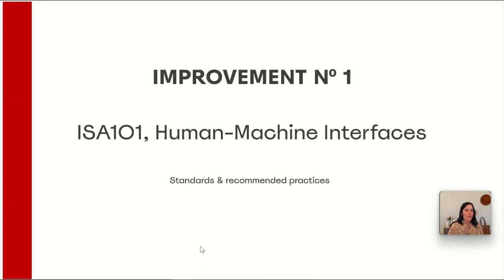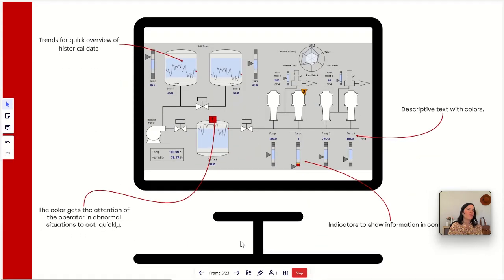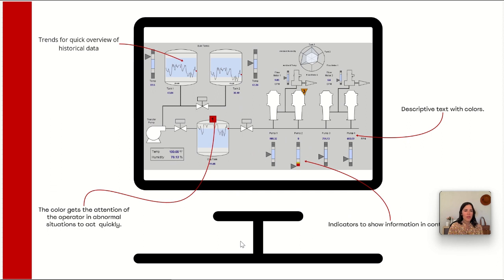We have improvement number one, which is the ISA-101 — the human-machine interfaces standard — that provides the standards and recommended practices to build a high performance HMI. The first thing you will notice when you are in front of a high performance HMI is that everything is now in grayscale colors.